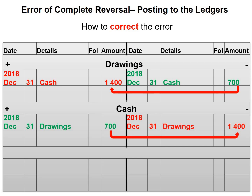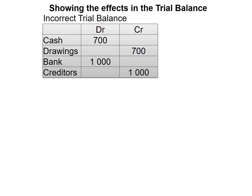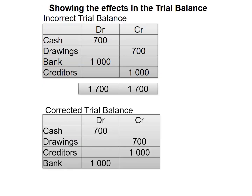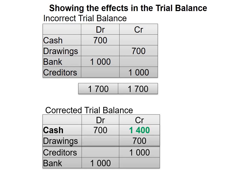Let's have a look at how this will affect our trial balance. Our incorrect trial balance shows cash with a debit balance of 700 and drawings with a credit balance of 700. But even though the error was made, the trial balance still balances. Looking at our corrected trial balance, we will credit our cash with 1,400, just like in the general journal and the general ledger, which will leave us with a credit balance of 700.